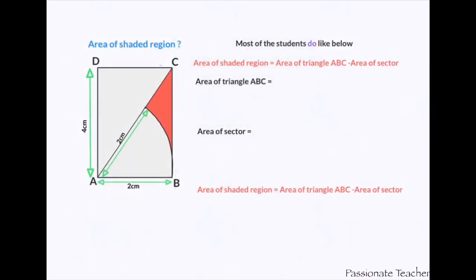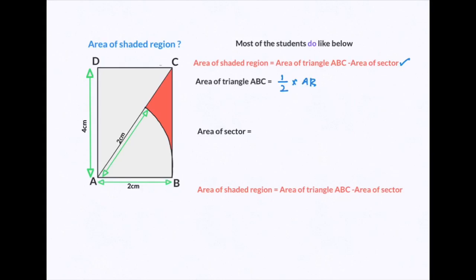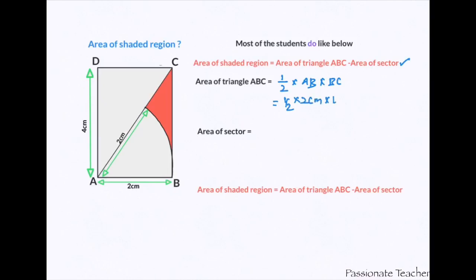Let's see the solution of this problem. Most students do it like this: area of the shaded region equals area of triangle ABC minus area of the sector. This statement is correct. While finding the area of triangle ABC, that equals half into base into height — this step is also absolutely correct. That equals half into AB, which is 2 cm, and BC, which is 4 cm, giving an area of the triangle equal to 4 cm². This part is absolutely correct.